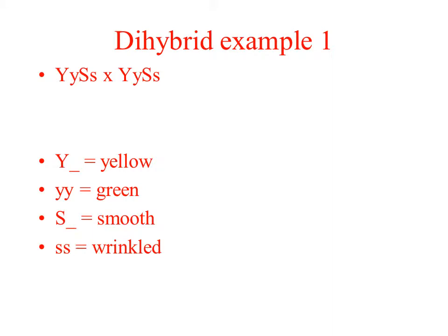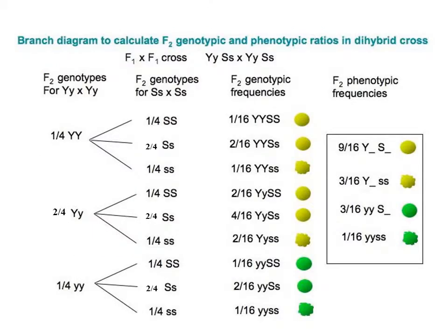I would like you to now demonstrate that you know how to do a dihybrid cross of two heterozygous individuals. Pause the slide if you are not ready to see the answer. This is the answer for that cross: we have a 9 to 3 to 3 to 1 ratio.